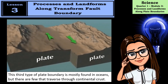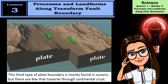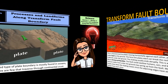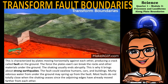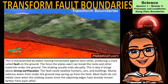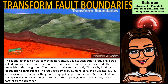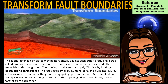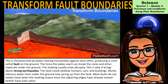The last lesson covers processes and landforms along transform fault boundaries. This third type of plate boundary is mostly found in oceans but some traverse through continental crust. It is characterized by plates moving horizontally against each other, producing a crack called a fault on the ground. The force can break rocks and other materials underground, causing strong earthquakes that end abruptly. The fault could swallow humans, cars, and buildings, and murky, odorous water may spring up. Most faults do not totally close after the shaking ceases.